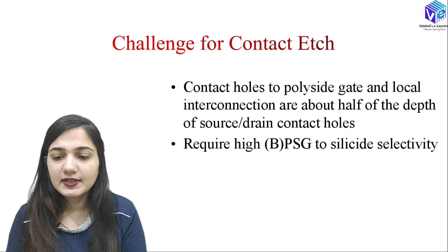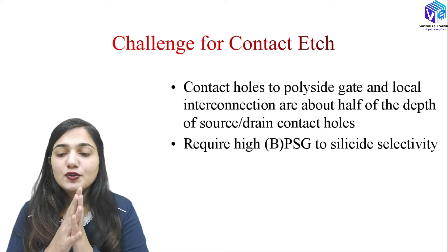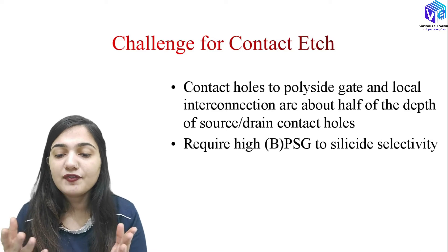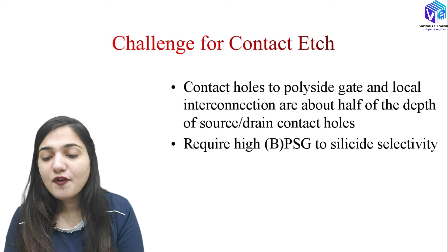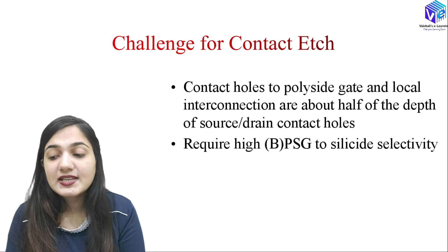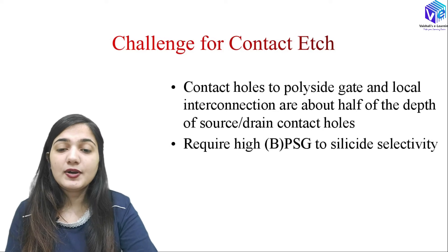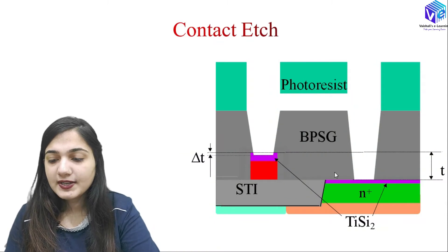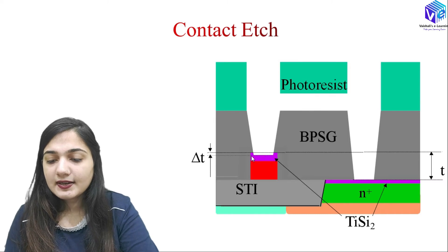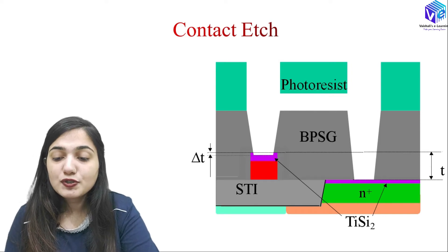The challenges in contact etch: holes are used to contact the polysilicide gate and make local interconnections, so the polyside gate holes will have only half the depth of the source and drain contact holes. This is the first challenge. It also requires high BPSG or PSG to silicide selectivity, which is very difficult to achieve — this is a big challenge. The delta-T represents the layer where the contact hole was not successfully formed.